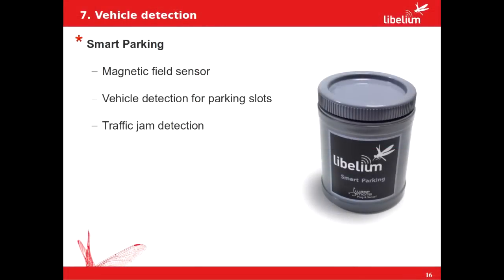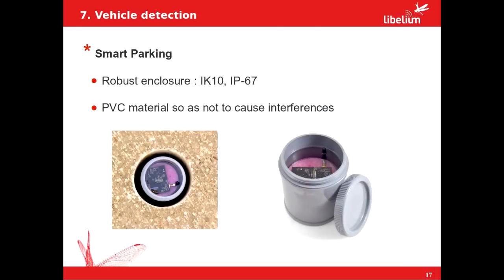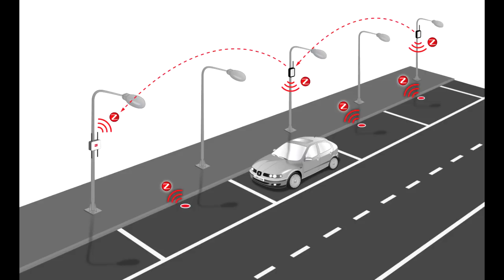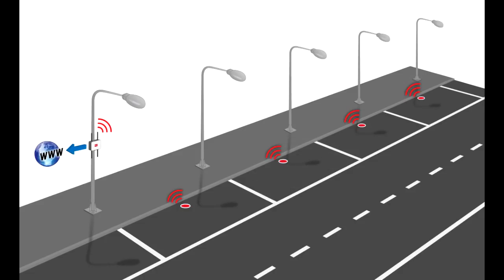Now we go to the vehicle detection application. For that we have the smart parking line with a magnetic field sensor that permits vehicle detection for parking slots and also traffic jam detection. The smart parking box is installed on the pavement surface. This enclosure complies with some regulations to ensure the isolation of the product from humidity. Besides, the material is designed so as not to cause communication interferences. The modules are buried on the surface and they communicate to Libelium. When a vehicle stays over the parking sensor, the information is transmitted through the network to Libelium, and finally Libelium sends the information over the internet.